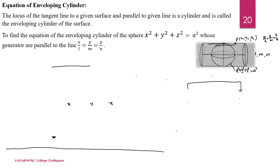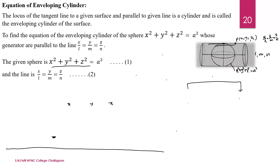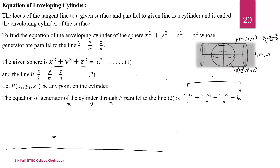First, let us see how to find the equation of the Enveloping Cylinder. We write the given equation of the sphere with generator line parallel to x/l = y/m = z/n. Now let P be any point on the cylinder. The equation of the line through P parallel to the given line is: (x − x₁)/l = (y − y₁)/m = (z − z₁)/n.